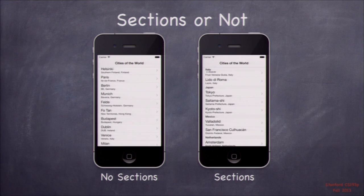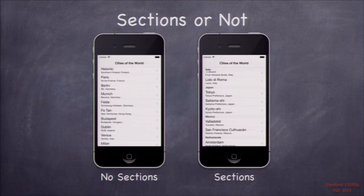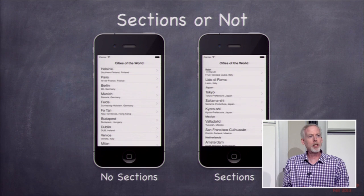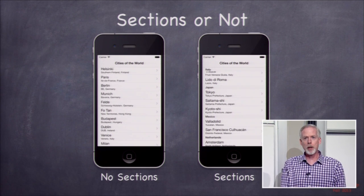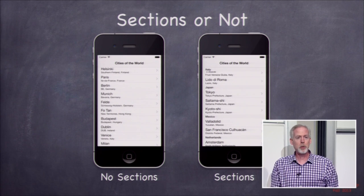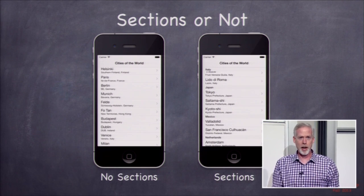A section is just a way to group the rows. Without sections you just have a bunch of cities like Helsinki, Paris, and Berlin. With sections, they're grouped by country — Japan has Tokyo and Kyoto, Mexico has its cities, Netherlands has Amsterdam. In your homework you're actually going to group places by the country they're in, so you will be using sections. In today's demo I'm not going to do sections — I have to leave you something to figure out on your homework.